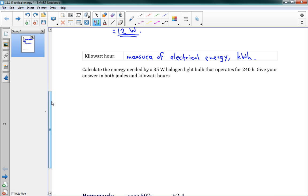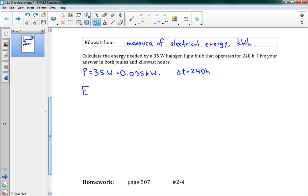For this problem, we have 35 watts. So, P equals 35 watts, and I'm going to rewrite that right away as 0.035 kilowatts. Delta T is 240 hours. I'm going to leave that just as 240 hours for right now, because this is the easy way to find our energy. Delta E equals P delta T - how much power times how much time. If I leave my units in kilowatts and hours, I'm going to get an answer in kilowatt hours. So, we get 0.035 times 240, which is 8.4 kilowatt hours. That's how we can find energy in kilowatt hours.